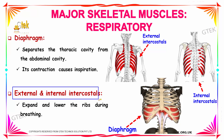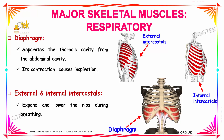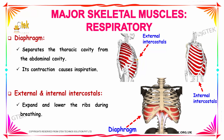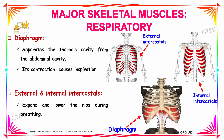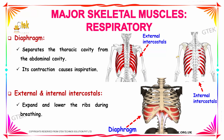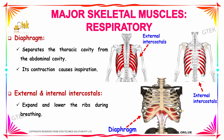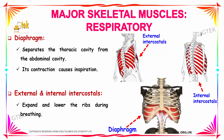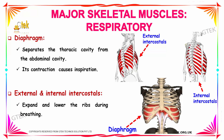Next we have the external and internal intercostals, located near the rib cage of a human body. The one coming from the vertebra is the external intercostal, and the one connected with the sternum is the internal intercostal. The expansion and lowering of the rib cage during breathing is controlled by these external and internal intercostals.